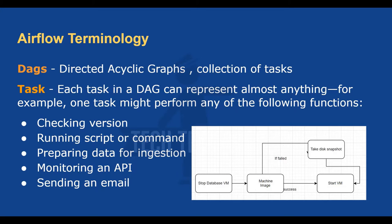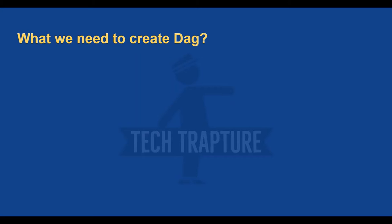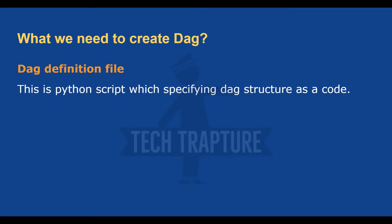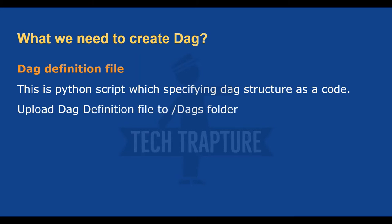From the last video, we saw the Airflow UI with one airflow_monitoring DAG. To create a DAG, we need a DAG definition file — a Python script. You can name it anything, like abc.py, and write the DAG code inside it. You define what each task does, then upload that .py file to the DAGs folder. If the syntax is correct, the DAG will appear in the Airflow UI.